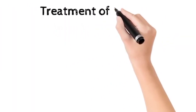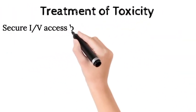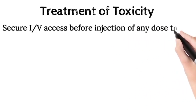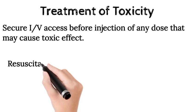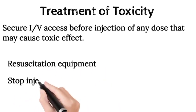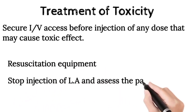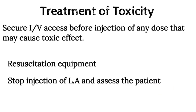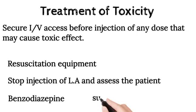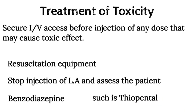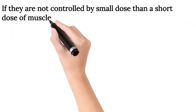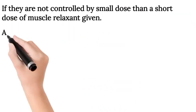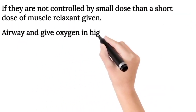Treatment of toxicity. Secure intravenous access before injection of any dose that may cause toxic effects. Adequate resuscitation equipment and drugs should be available before starting to inject. Stop injection of local anesthetic and assess the patient. Convulsions are treated with small doses of benzodiazepine or short-acting barbiturates such as thiopentone. If not controlled by small doses, a short-acting muscle relaxant is given. Ensure an adequate airway and give oxygen in high concentration.